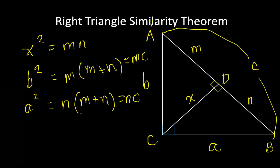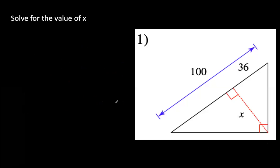Please remember these formulas: X squared equals MN, B squared equals the segment closer to B times the whole hypotenuse, and A squared equals the segment of the hypotenuse closer to A times the whole. We will be using these when solving right triangles.